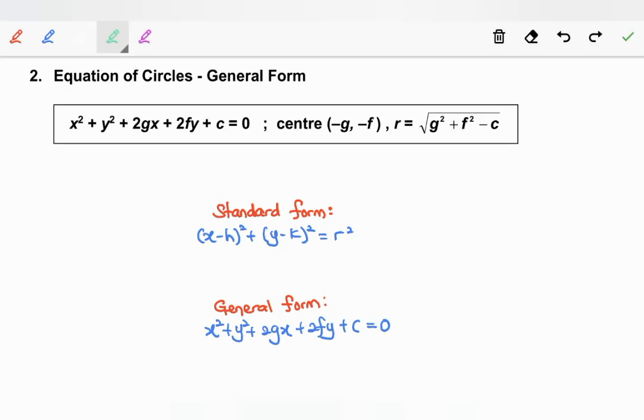From the previous video, we already learned about the standard form of a circle. The standard form of equation of a circle is x minus h squared plus y minus k squared equal to r squared. From this equation, we know that the center of a circle is hk and the radius is r.